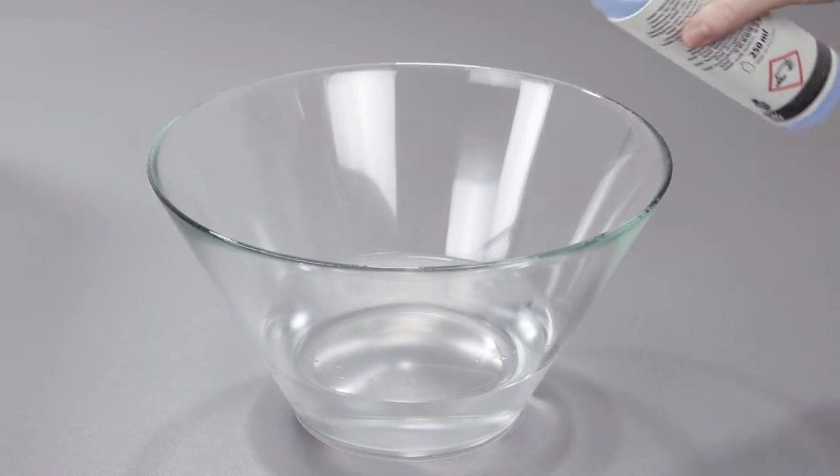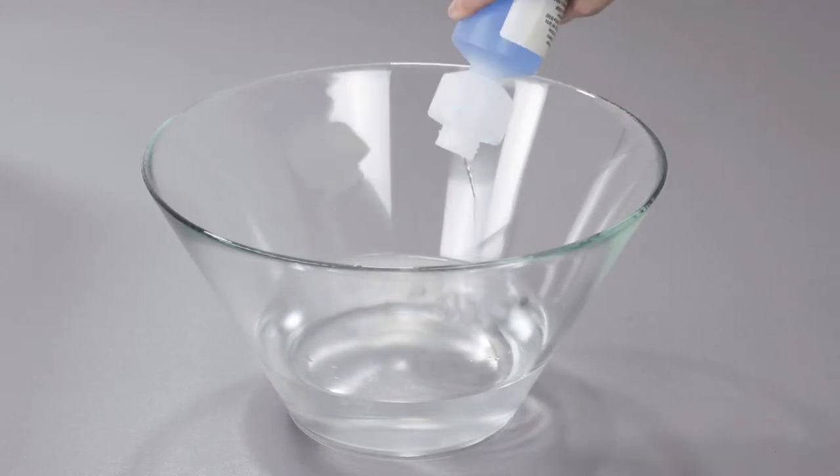To measure out a dose, open the bottle. Squeeze gently to fill the dosing device with 5ml. Add the special cleaner to half a litre of warm water.